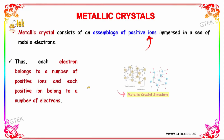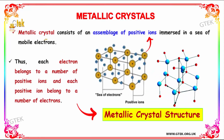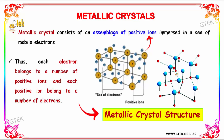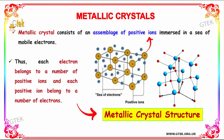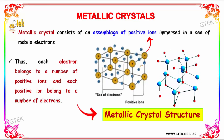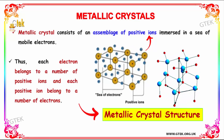The next one is metallic crystals. The metallic crystal consists of an assemblage of positive ions immersed in a sea of mobile electrons — positive surrounded by negative. Thus, each electron belongs to a number of positive ions and each positive ion belongs to a number of electrons.